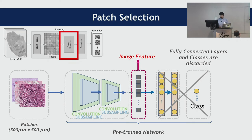Once we have the patches, we give them to a pre-trained network from which we extract image features for those patches. This pre-trained network could be any deep network that currently exists — for example, VGG16, VGG19, DenseNet, or InceptionNet. We have tried different networks in our study.